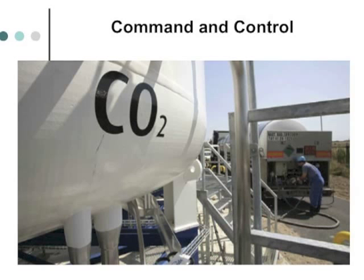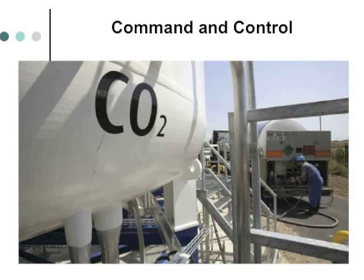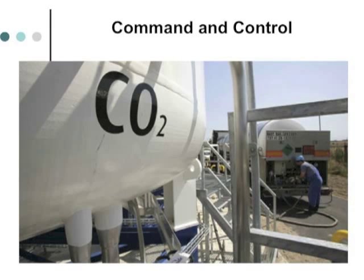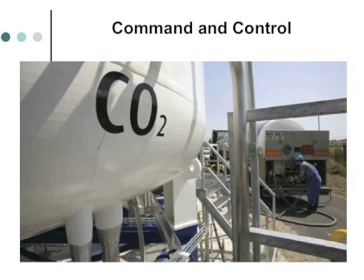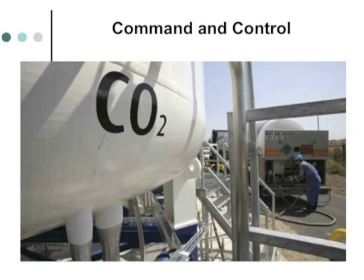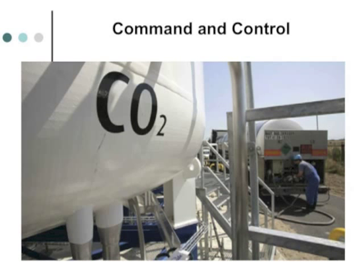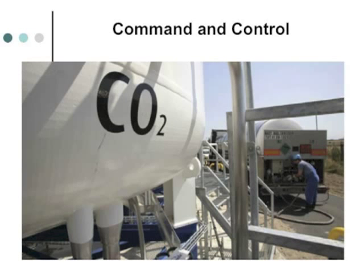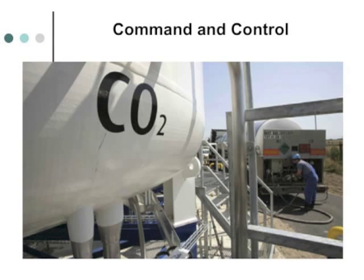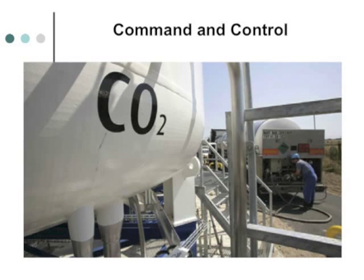Another approach we're already using is command-and-control. The EPA's tailpipe rule mandates that less CO2 comes out of automobiles by increasing fuel efficiency. A similar command-and-control policy implemented by the Obama administration says that new power plants will have to have limits on the amount of CO2 they can emit, and how to set those limits is now being discussed. There's no taxation — it's just commanding control at specific targets.